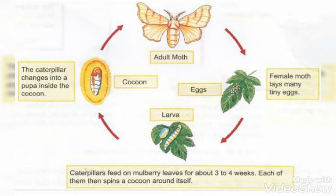It will then change into an adult moth again after coming out from the cocoon, and this cycle will go on and on. From adult moth, it lays eggs; from eggs, it changes into larva; from larva, into cocoon; and then again into an adult moth. Remember, this is similar to a butterfly's life cycle, but here we are getting silk from the cocoon of the silk moth.